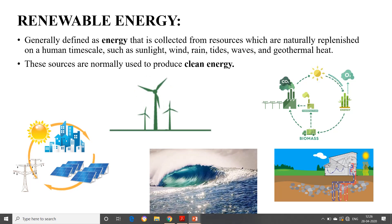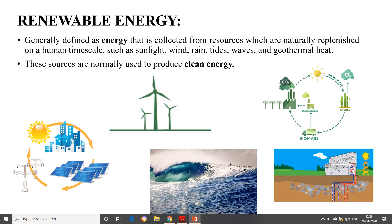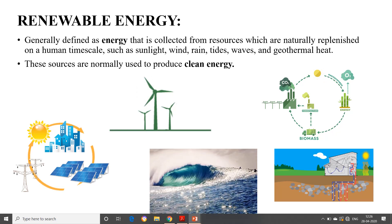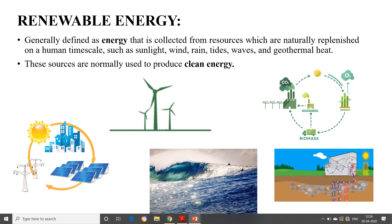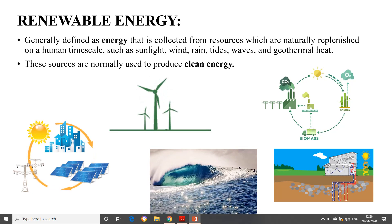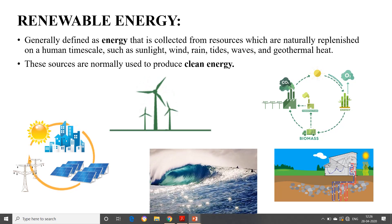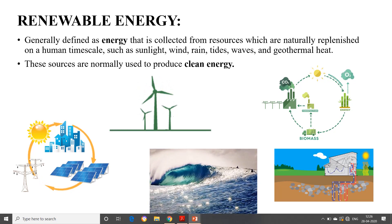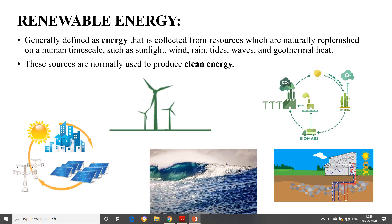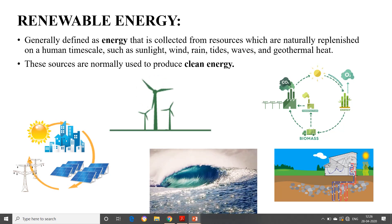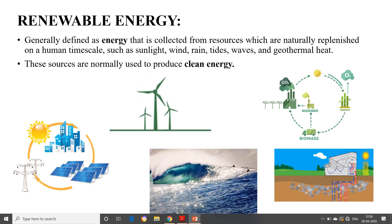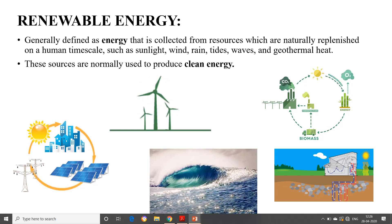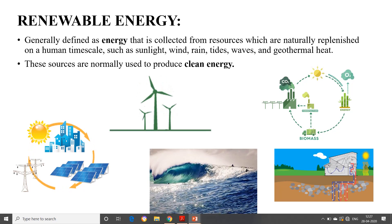What is renewable energy? It is generally defined as energy that is collected from resources which are naturally replenished on a human scale, such as sunlight, wind, rain, tides, waves and geothermal heat. These sources are replenished over time — for example, rainwater goes through a continuous cycle. These sources are normally used to produce clean energy, meaning they do not produce pollutants or harm the environment as other sources do.